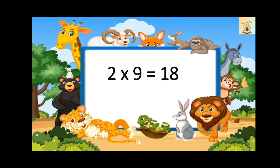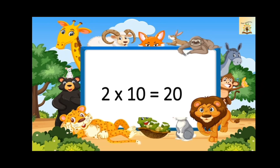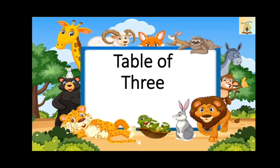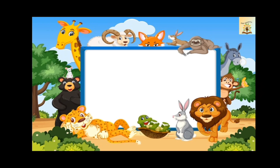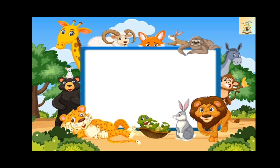Two nines are eighteen. Two tens are twenty. Table of three. Three ones are three. Three twos are six.